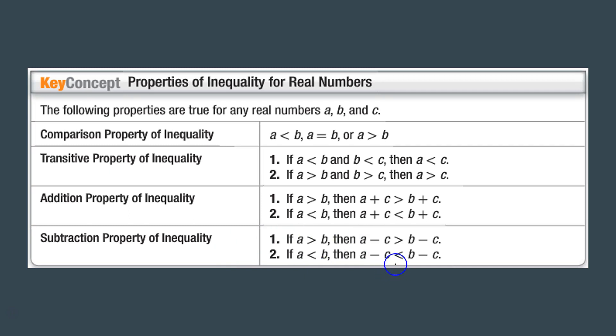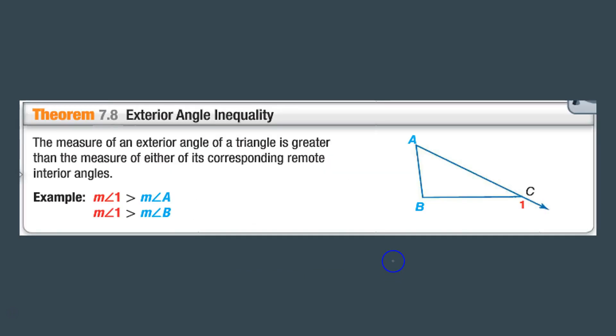Then we have exterior angle inequality. The measure of an exterior angle of a triangle is greater than the measure of either of its corresponding remote interior angles. So the measure of angle 1, this one here, is greater than the measure of angle A. Angle 1 is also greater than the measure of angle B here, because both of these make up this one here. So this one's always going to be greater - it's only one at a time.